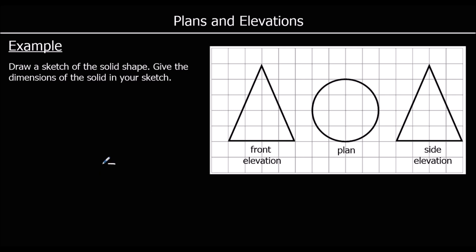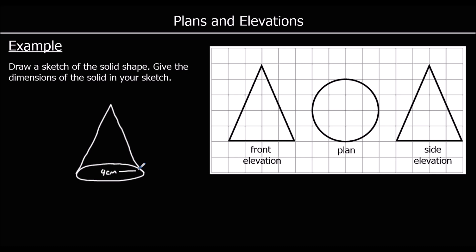We've got a diameter of 4 centimetres and a perpendicular height of 5 centimetres. So 4 centimetres as diameter and a perpendicular height of 5 centimetres — and that is all we need. That is a sketch of our solid.